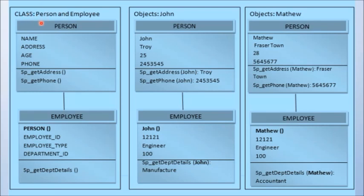For example, we would create a person class and it will have name, address, age, phone and get_address, sp_get_phone as procedures in it. The values for these attributes at any instance of that time are objects. That is, John, Troy, 25, 245-3545, get_address of John, get_phone of John, form one person object.